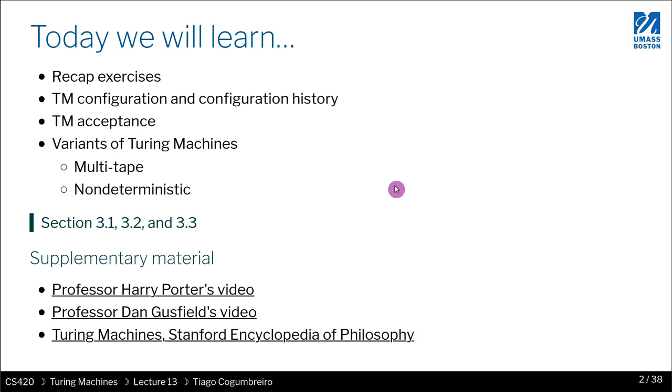So we'll start with a few exercises and then we're going to talk a bit about Turing Machine configurations and their configuration history, which is something that I included in the last class's slides. And then we're going to revisit acceptance and then we're going to talk about variations or extensions of Turing Machines and trying to understand whether they're more expressive or less expressive.